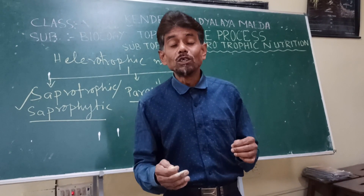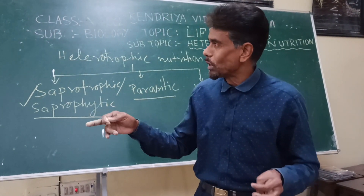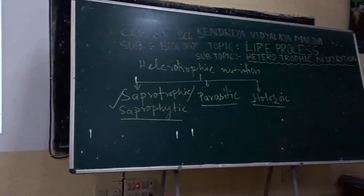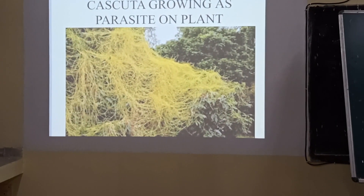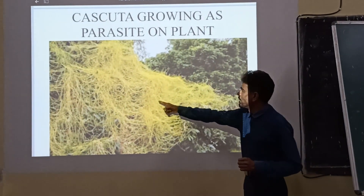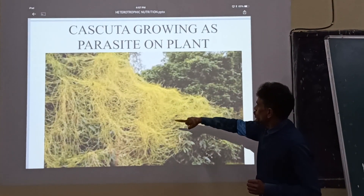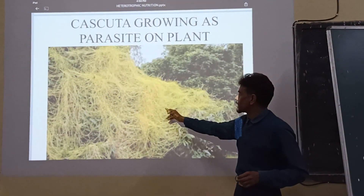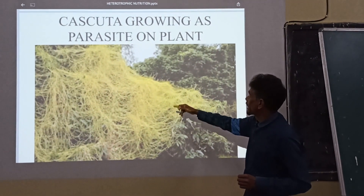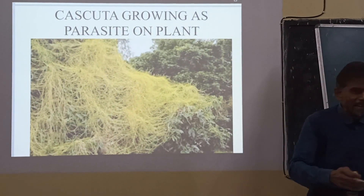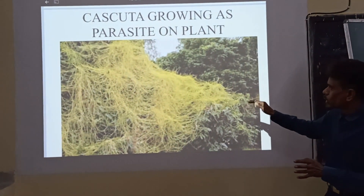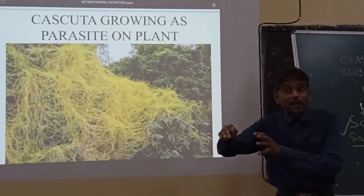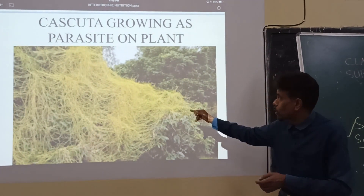In the case of plants, we also have examples of parasites. You might have seen a plant otherwise called Amarbel, or what we call Cuscuta. Let me show you a diagram of Cuscuta. You can see here the greenish-yellow cylindrical very fine thread-like structure covering the shoot portion of the plant. The plant is wilting because of this mass — this is nothing but the parasite Cuscuta, also called Amarbel.